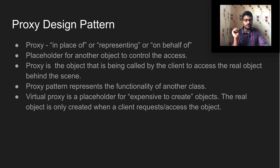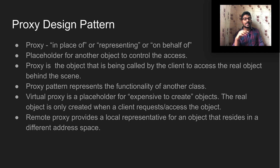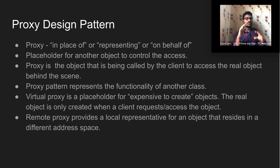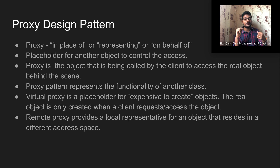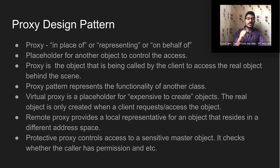The second type is the remote proxy, which provides a local representative for an object that resides in a different address space. The client is not aware of those details. The proxy object handles it — it fetches the object from the remote address space for the particular request.